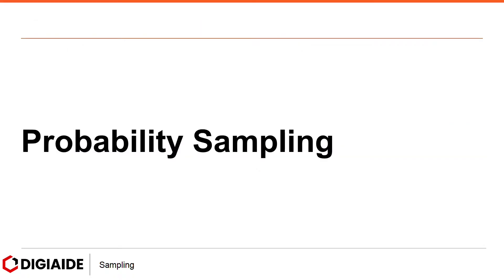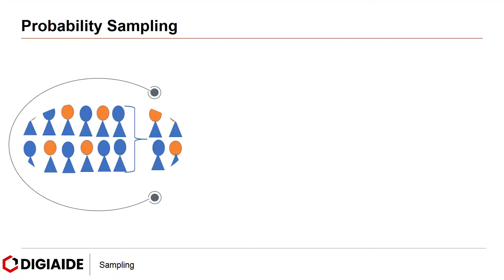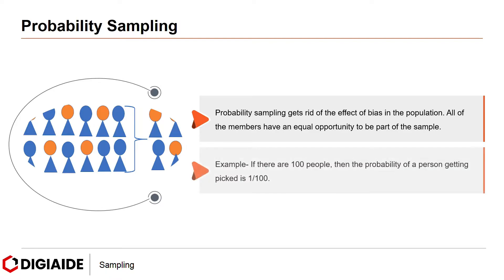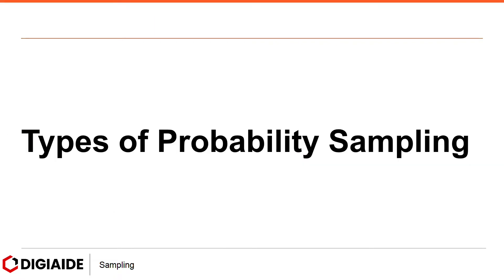Now let's look at each one of them briefly. Starting with probability sampling — as stated earlier, probability sampling gets rid of the effect of bias in the population. All members have an equal opportunity to be part of the sample. For example, if there are 100 people, the probability of a person getting picked is 1 in 100. Now let's look at the types of probability sampling.